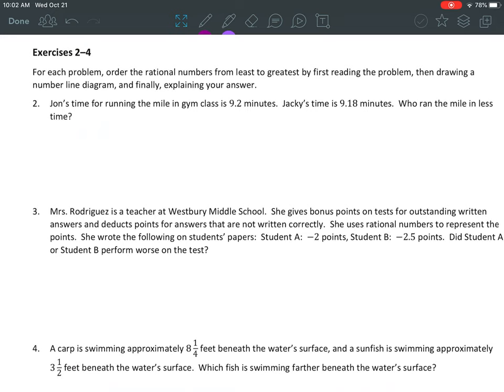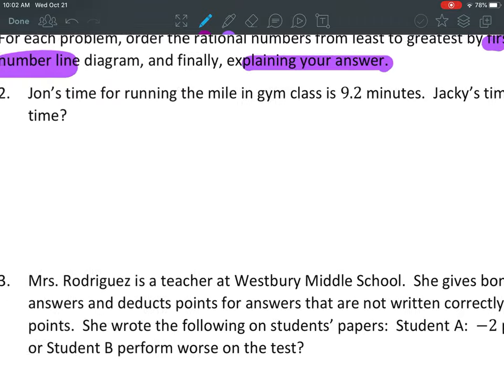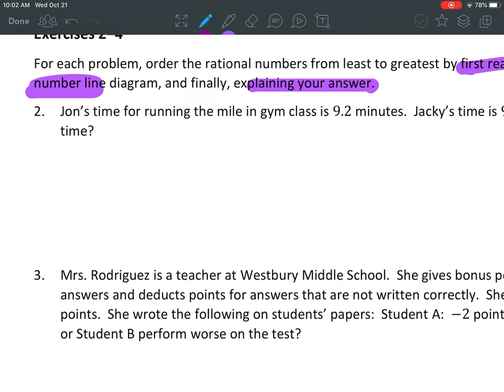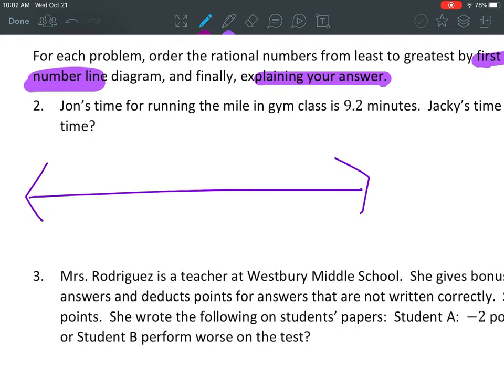Okay, exercise 2. For each problem, order the rational numbers from least to greatest by first reading the problem. So read the problem, draw a number line, and then explain your answer. All right, so John's time for running the two mile in class is 9.2 minutes. Jackie's time is 9.18. Who ran the mile in less time? So, we read it. Now we need to draw our number line. And I'm going to count by, so I'm going to have 9.10 here, 9.15 here, and 9.20 here.